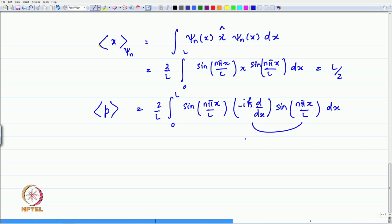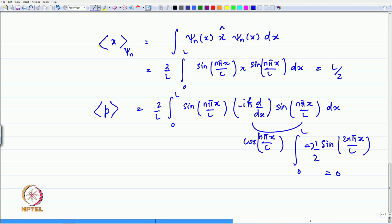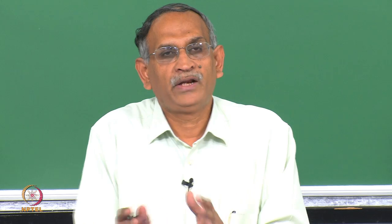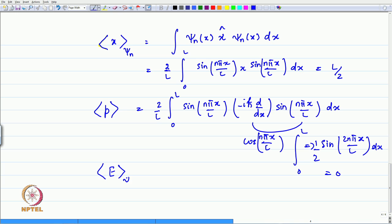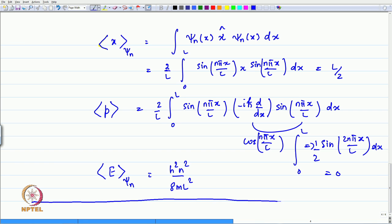So it is easy to verify the expectation values for position and momentum. For the kinetic energy of a particle in a box — where the total energy equals the kinetic energy inside the box — the average energy in state psi_n comes out to be h-squared n-squared divided by 8mL-squared. These are simple prescriptions for calculating average values based on quantum mechanics.